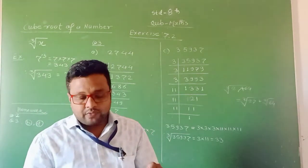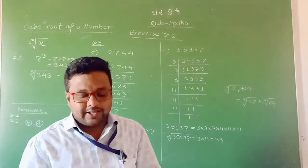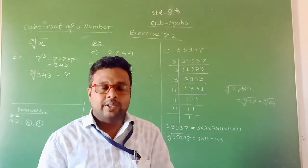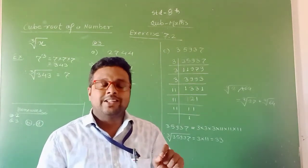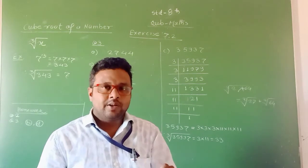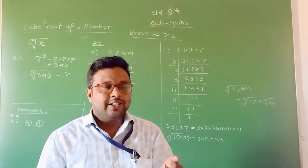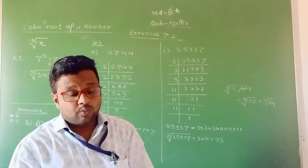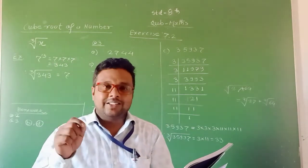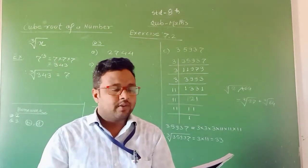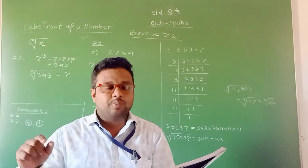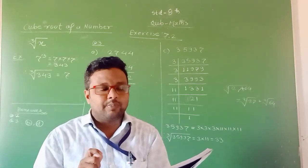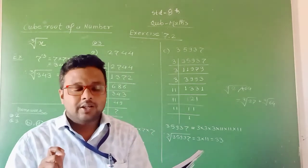Statement I: No perfect cube can end in exactly two zeros. This is a true statement. If you take the cube of any number followed by a zero, then that number's cube has three zeros — or a multiple of three zeros. There are no two zeros. Therefore, this statement is true.